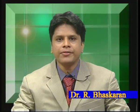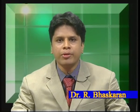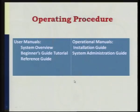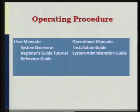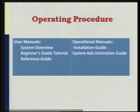Welcome back. Before the break we spoke about the myths people generally think about software, defined what software engineering is, and discussed how to define software. To proceed, operating procedure involves two different things: the user manual and the operational manual. The user manual covers system overview, beginner's guide tutorial, and a reference guide for users. For administrators, the operational manual covers installation procedure and system administration guide. These two things are the major components of the operating procedure.